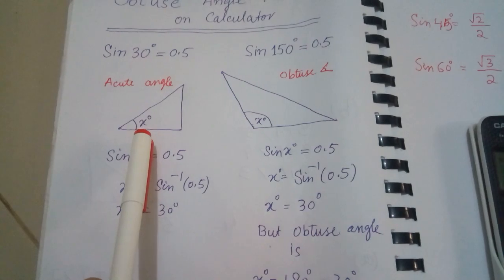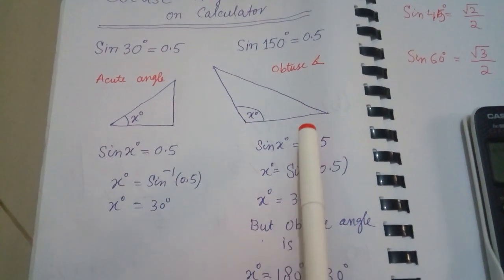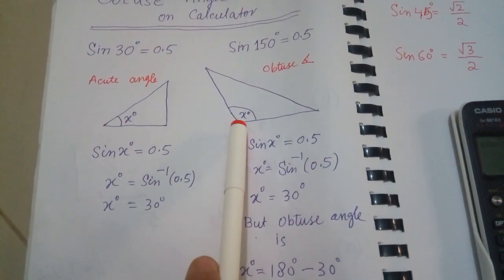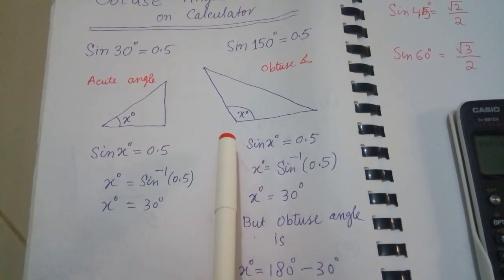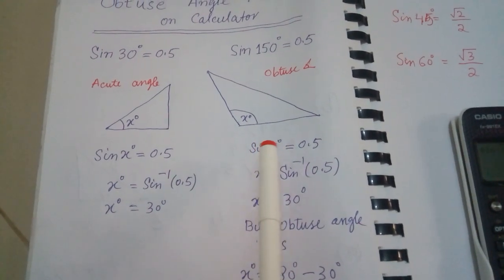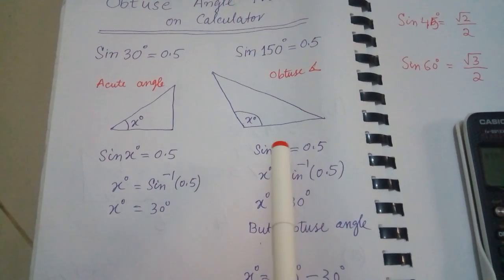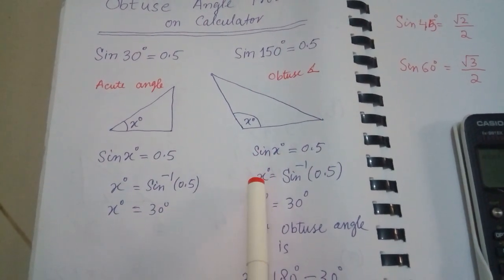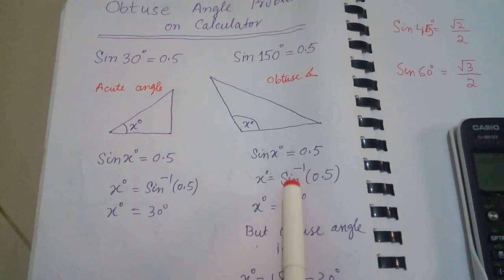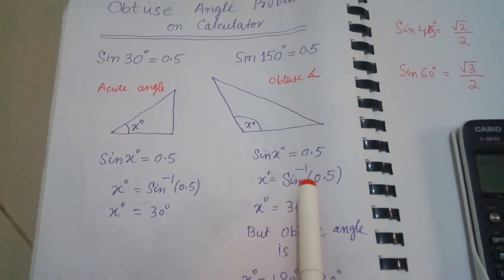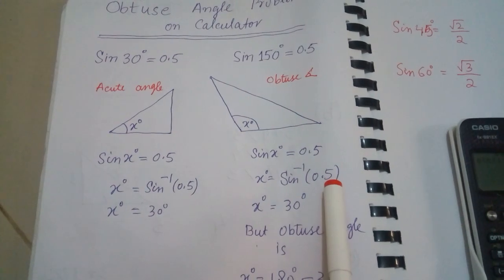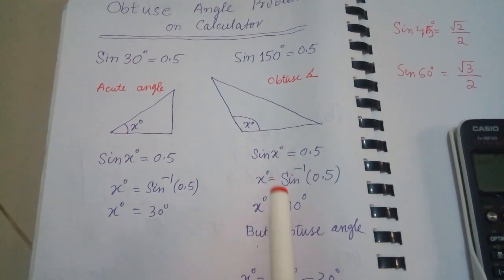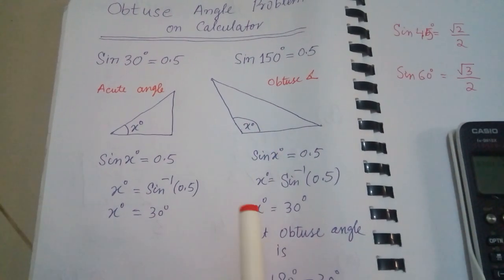This 30 degrees is correct for the acute triangle, but what if the triangle is obtuse? In this case, this angle is more than 90 and sin x is again 0.5. If we find this angle using the calculator — sin inverse of 0.5 — the calculator gives 30 degrees, which is not correct for the obtuse angle triangle.